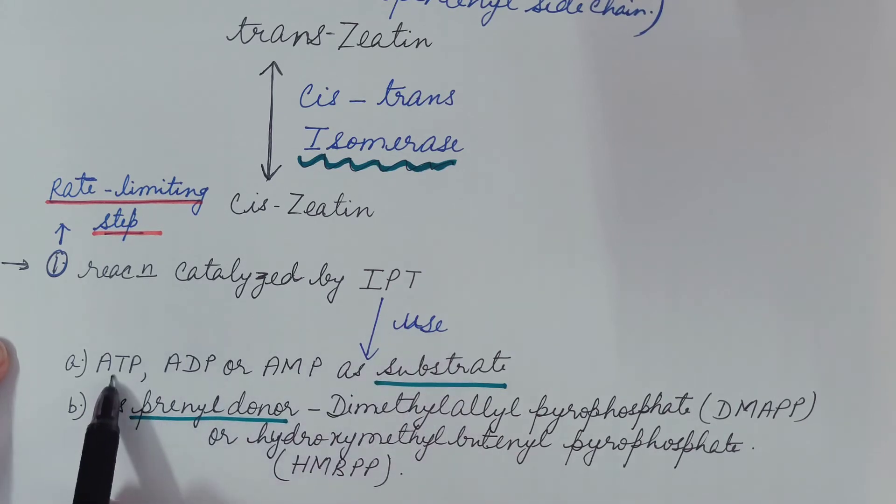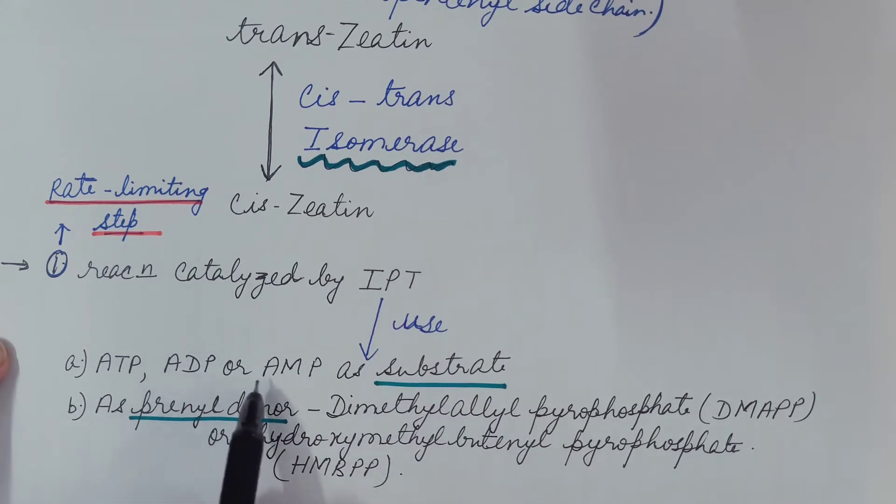Here ATP, ADP or AMP is used as substrate. And prenyl donor in this step is dimethylallyl pyrophosphate DMAPP, as discussed in the above pathway, or sometimes hydroxymethyl butanyl pyrophosphate, that is HMBPP.